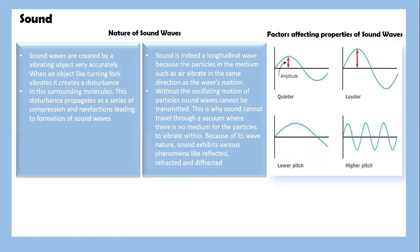Let's look at the topic sound. This covers the nature of sound waves. Sound waves are created by a vibrating object very accurately. When an object like a tuning fork vibrates, it creates a disturbance in the surrounding molecules. This disturbance propagates as a series of compressions and rarefactions leading to formation of sound waves. Sound is indeed a longitudinal wave because the particles in the medium such as air vibrate in the same direction as the wave motion. Without the oscillating motion of particles, sound waves cannot be transmitted. This is why sound cannot travel through a vacuum where there is no medium for the particles to vibrate within. Because of its wave nature, sound exhibits various phenomena like reflection, refraction, and diffraction.